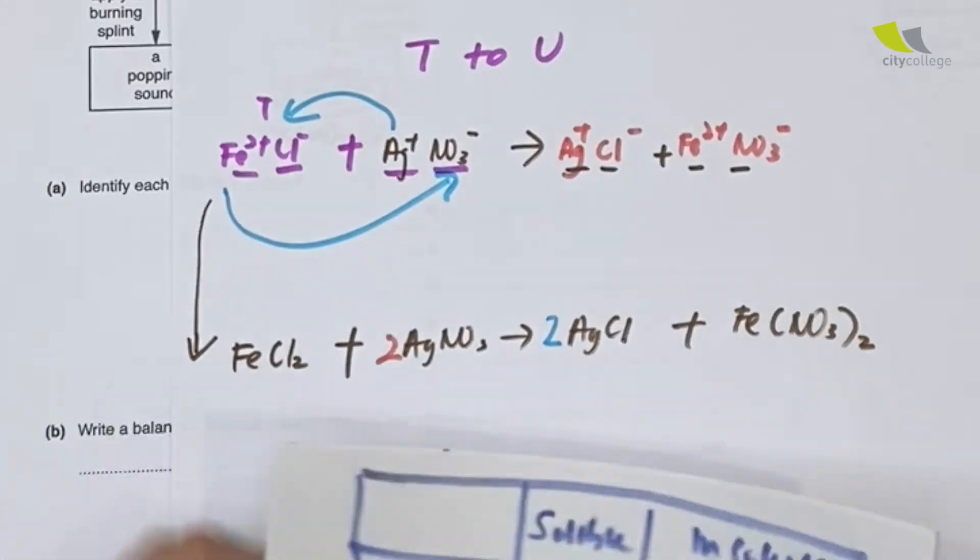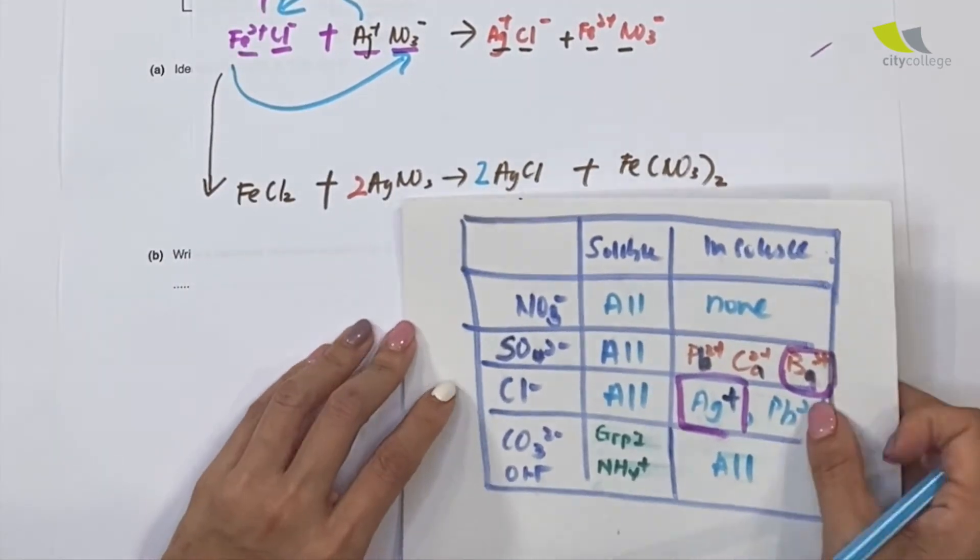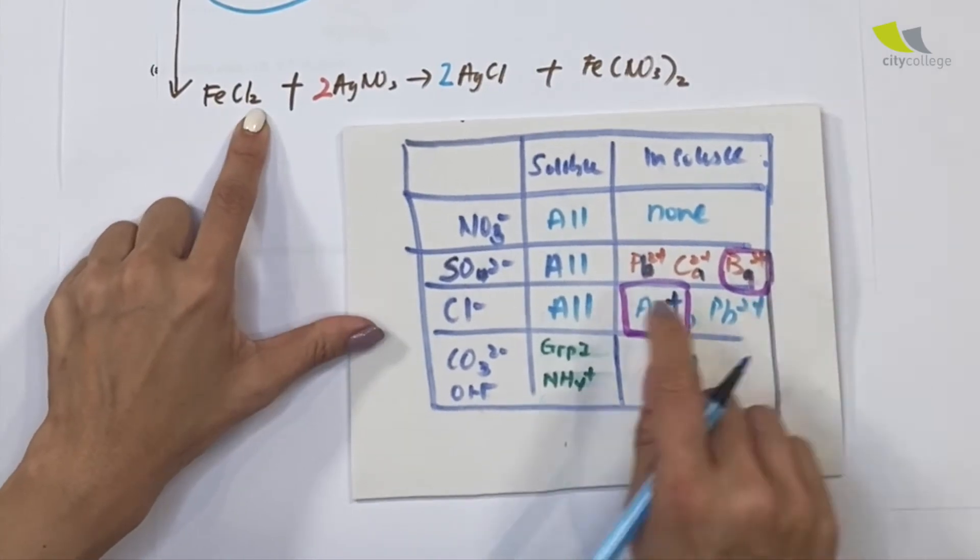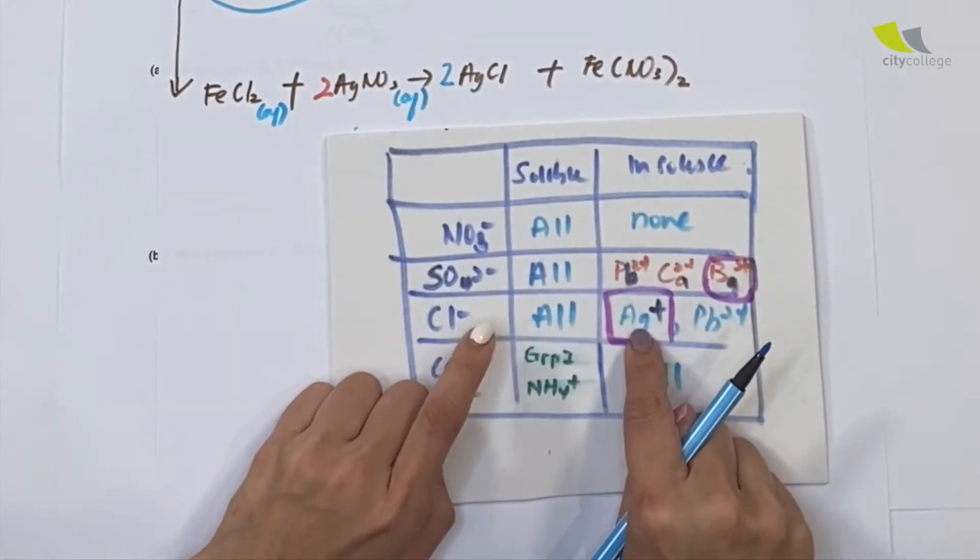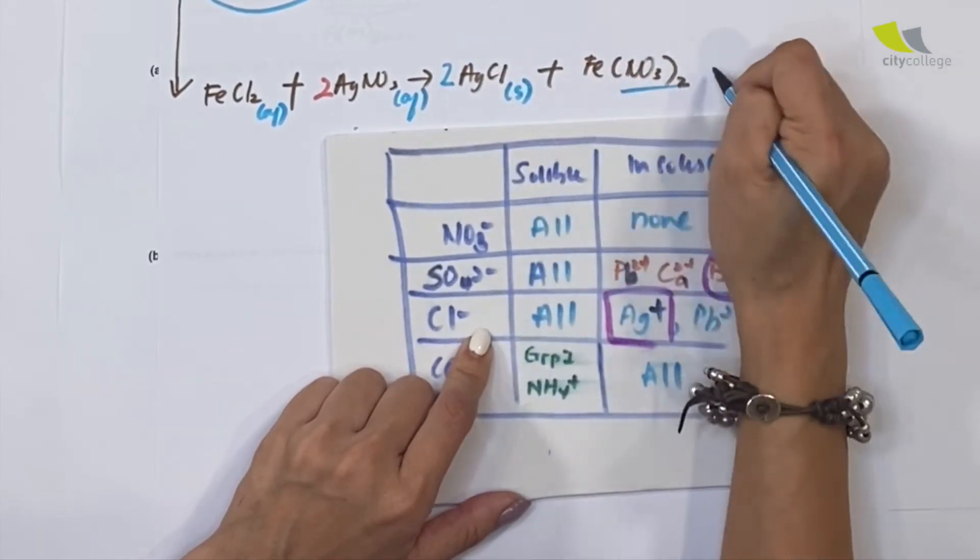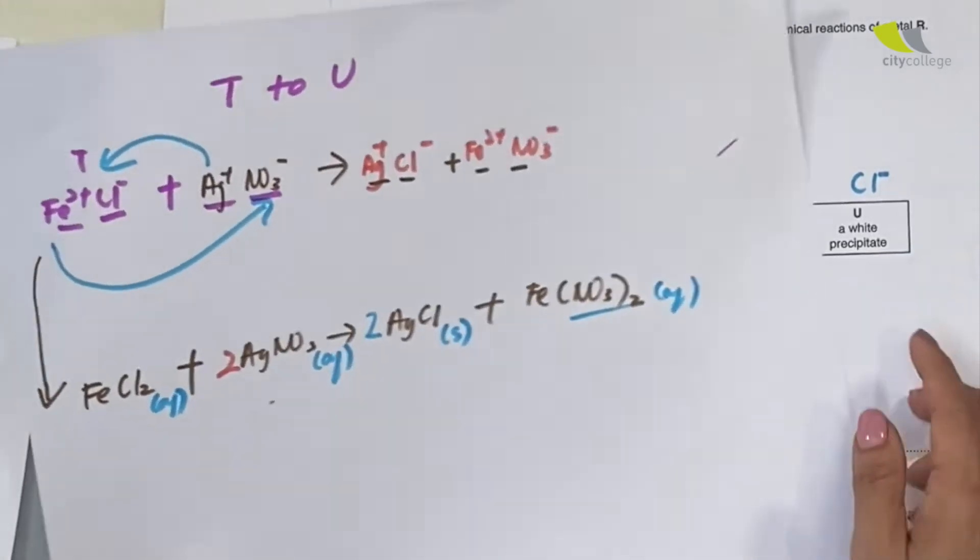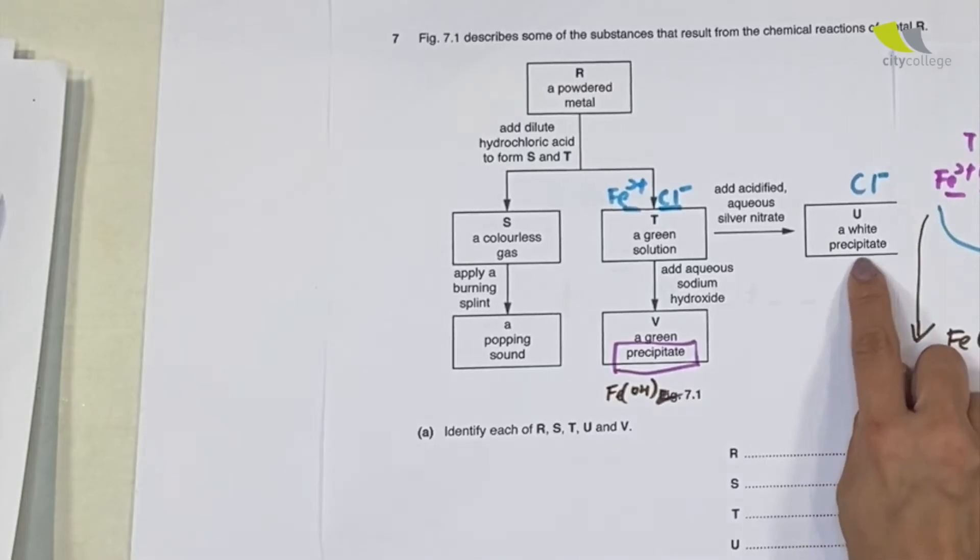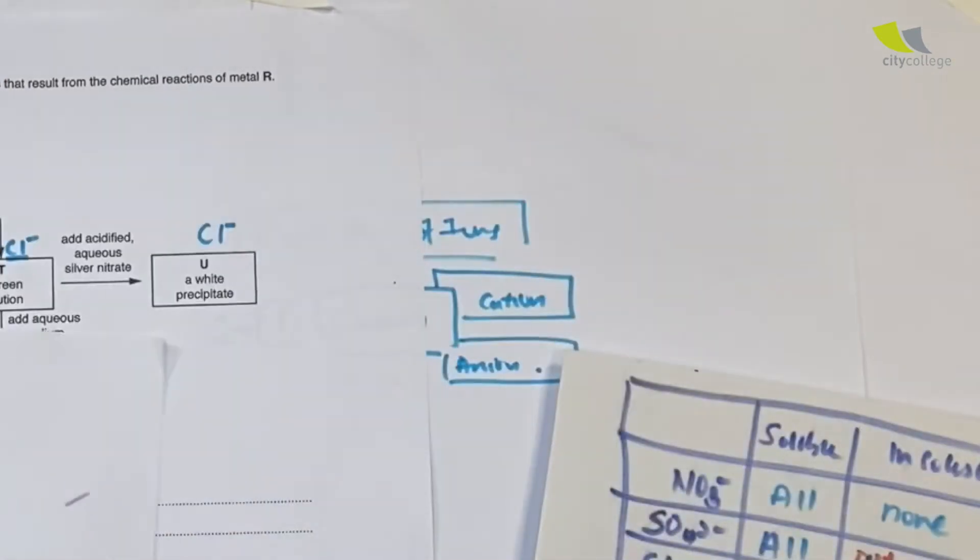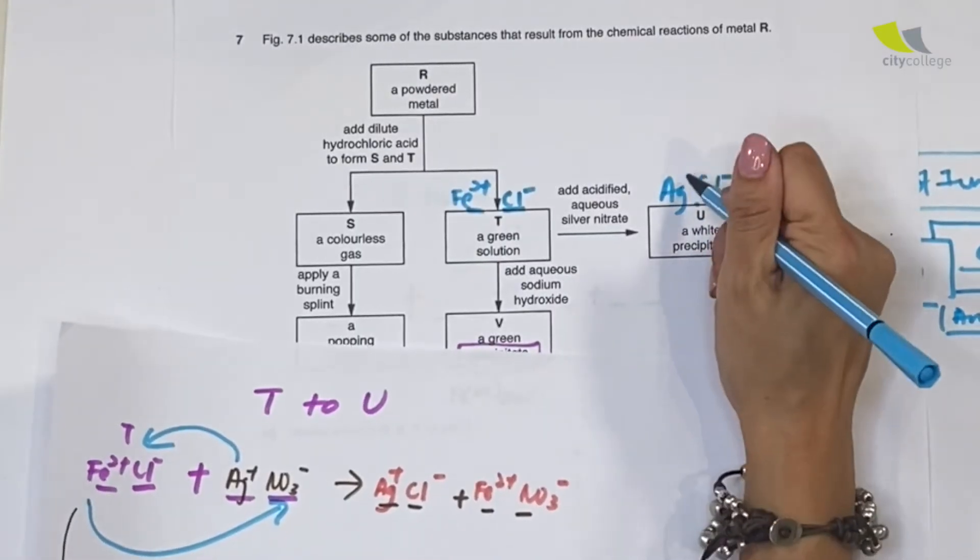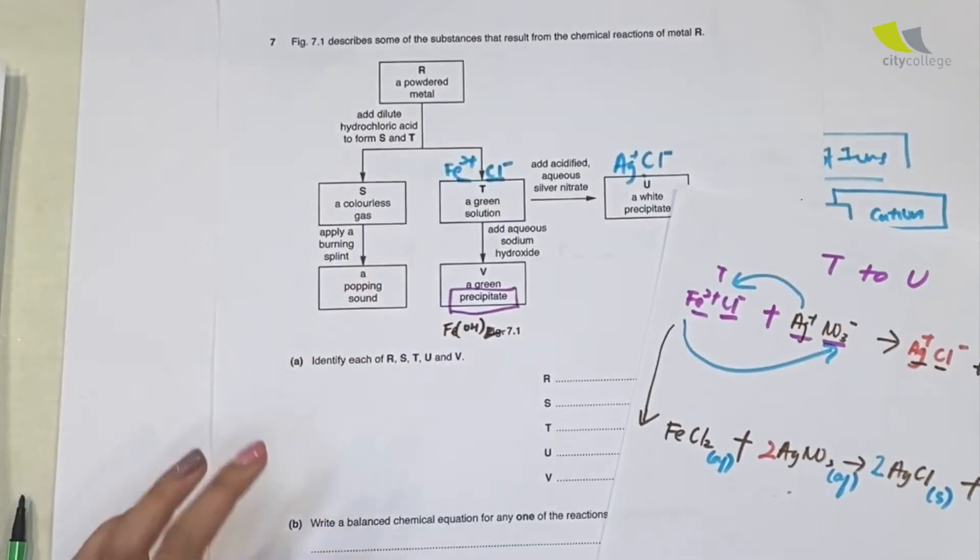Right now, we're going to write down the same thing. State symbol. You notice that the state symbol is so vital in helping us solve the question. Over here, iron chloride. Chloride, aqueous. Nitrate. All nitrates are soluble. Aqueous. Chloride, Ag is insoluble. Immediately, I write down S. All nitrates are soluble. Aqueous. Then, let's see who is my answer for my U. U over here is actually a white precipitate. And precipitate means it's a solid state. And this is my answer, silver chloride, AgCl. So, I found not only one answer, two answer, three answer, and last, a balanced equation. Five marks in my pocket.